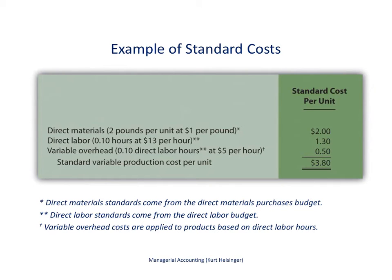Here's an example of standard costs for a company called Jerry's Ice Cream, which we'll use for all videos related to establishing standard costs and performing variance analysis. For direct materials, we've established that we expect to use two pounds of materials per gallon of ice cream produced, at a standard price of one dollar per pound. Those are the two components of the standard cost per unit for direct materials, giving a standard cost per unit of two dollars — meaning it costs two dollars in direct materials to make one gallon of ice cream.